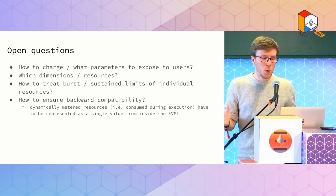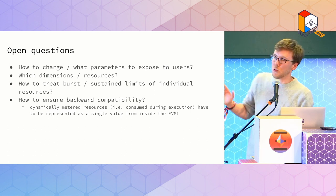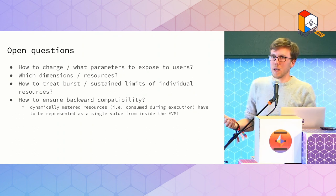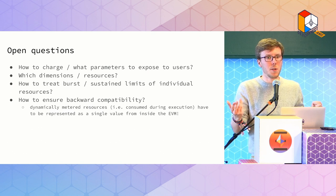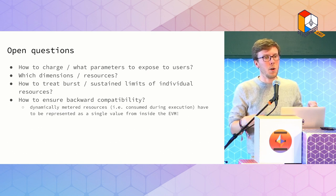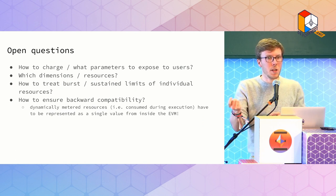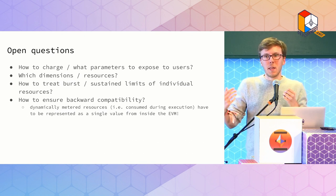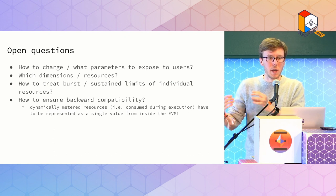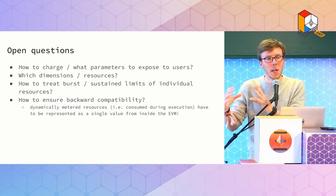How does this work with the burst and sustained limits we discussed? Some resources only have a burst limit. How do we handle that — do we have to use a very small multiple so we don't lose too much average resource usage? And a really big one: how do we ensure backwards compatibility? This is really important for dynamically metered resources. Layer two calldata and blob transactions are not dynamically metered — you can look at a transaction from the outside and just say it has this much calldata or blob data. But other resource types like storage accesses and computation — you only know how much the transaction consumes while it is actually running. Inside the VM there are baked-in assumptions about how this is metered: when you do a subcall you send a fixed amount of gas, which is a one-dimensional value. You can't suddenly make that five-dimensional; it just wouldn't work with existing contracts.